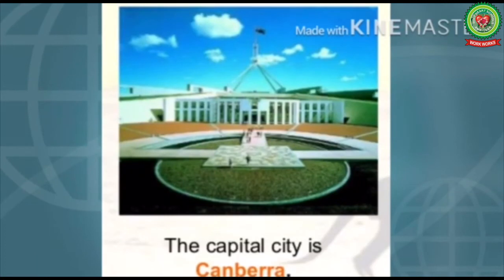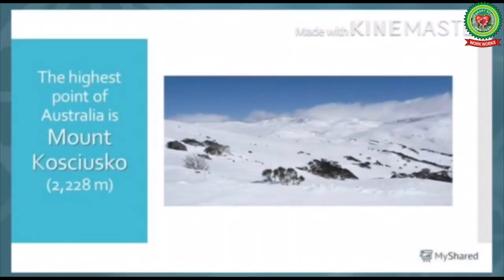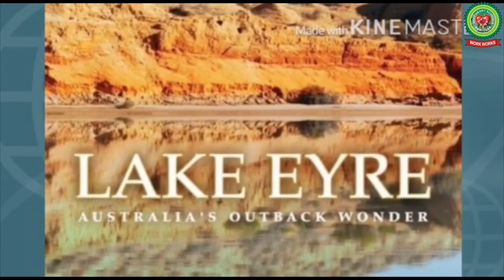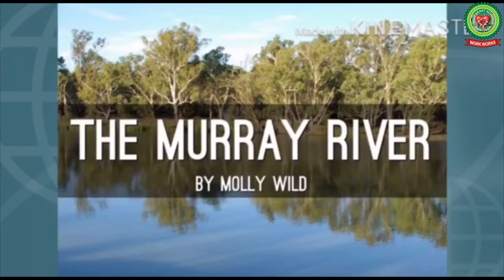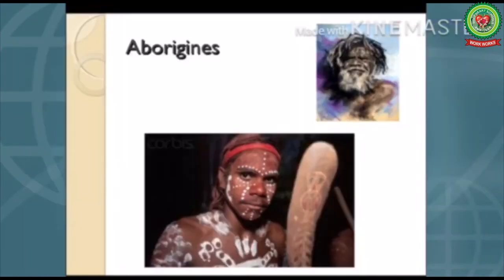Canberra is the capital of Australia. It covers an area of about 7,686,850 square kilometres. Mount Kosciuszko is the highest point, while Lake Eyre is the deepest point of Australia. The longest river of Australia is the Murray. The Great Victoria Desert is its largest desert.